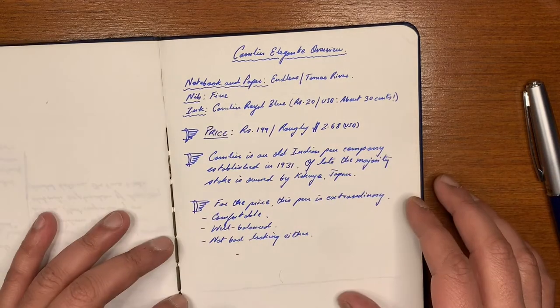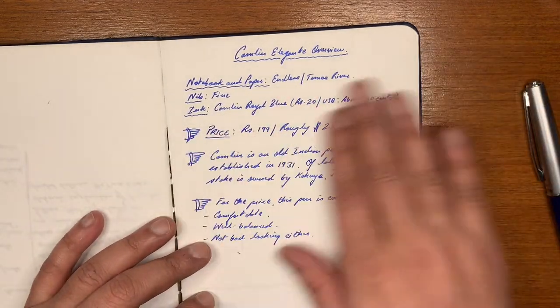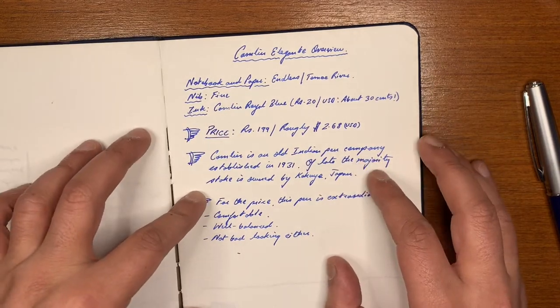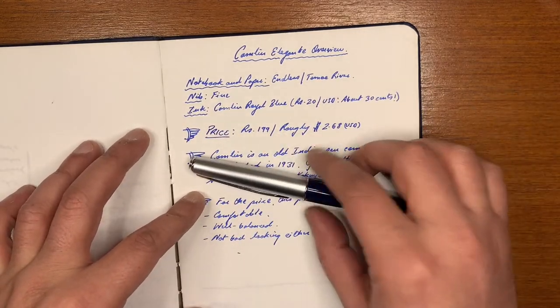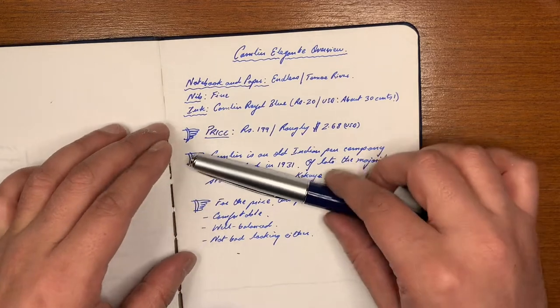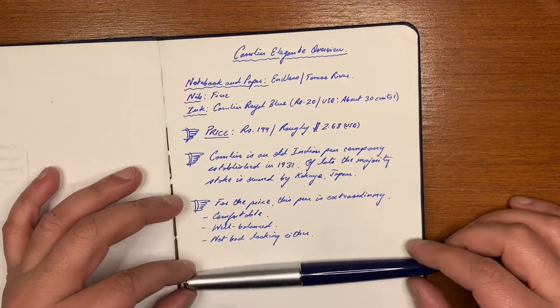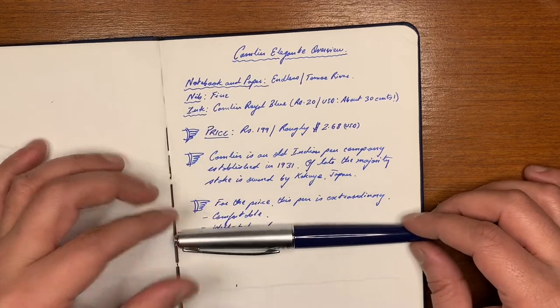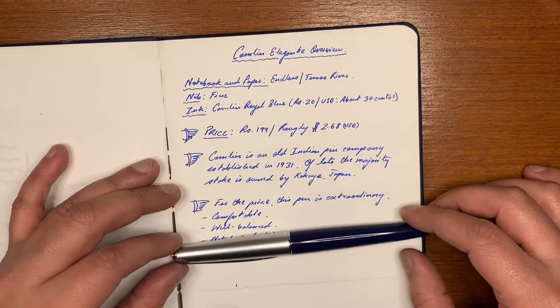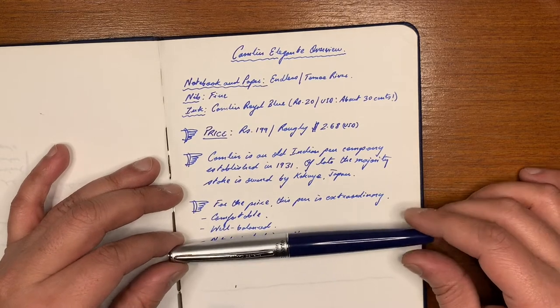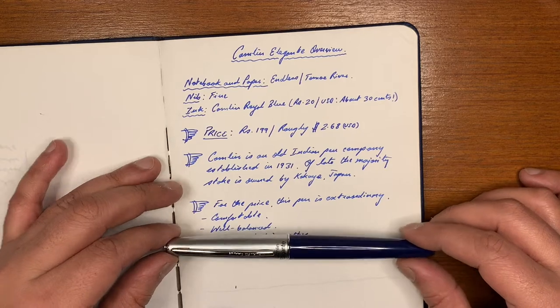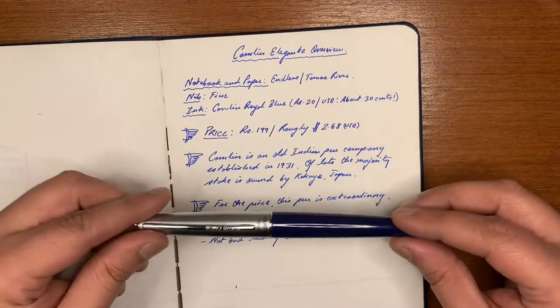It's no nonsense. There's no bleed through, no shading or any fancy stuff happening. The price of this pen is 199 rupees which is about 2.68 dollars roughly. And it's a pretty good offering from a pen company that's been around for a long time, established in 1931. And then at some point I think Kokuyo had some stake in it or took over a major stake in this company.